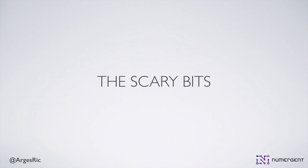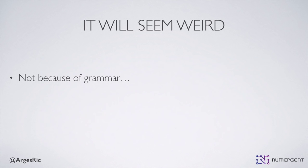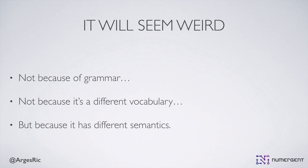I'm actually going to start with the scary bits. Clojure does have some scary bits — we're mentioning the parentheses. The first thing is that it's going to look weird. If you're used to Clojure, you can just see this and read it at a glance, but it's going to be unfamiliar initially. It's going to feel weird — not because of its grammar, which is very straightforward. It's going to feel weird because Clojure has different semantics from what you're used to.